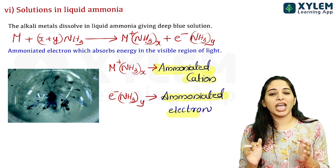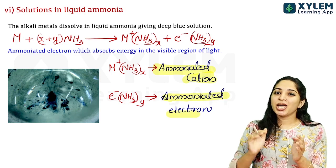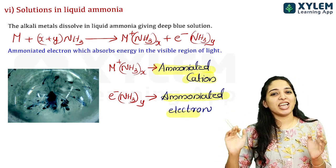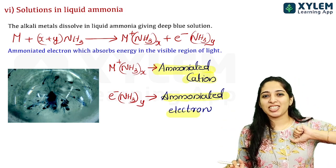Let's get to the exam. The answer is: ammonia electrons are formed in ammonia electrons.